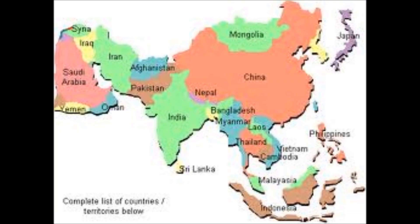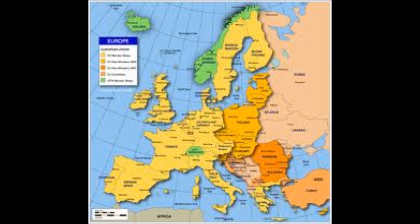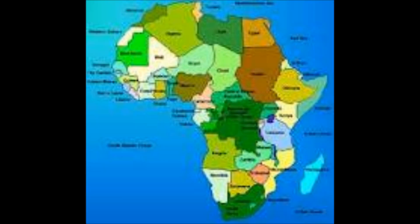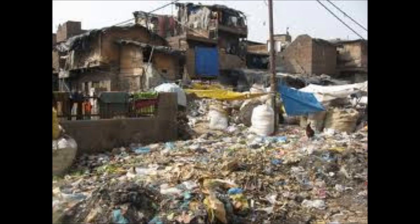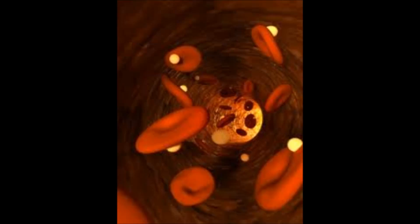Where did it start? Polio takes its roots to Asia, Europe, and Africa, although it is mostly occurring in developing countries or unsanitary places. Why is this so? Because polio enters through the bloodstream with contaminated feces.